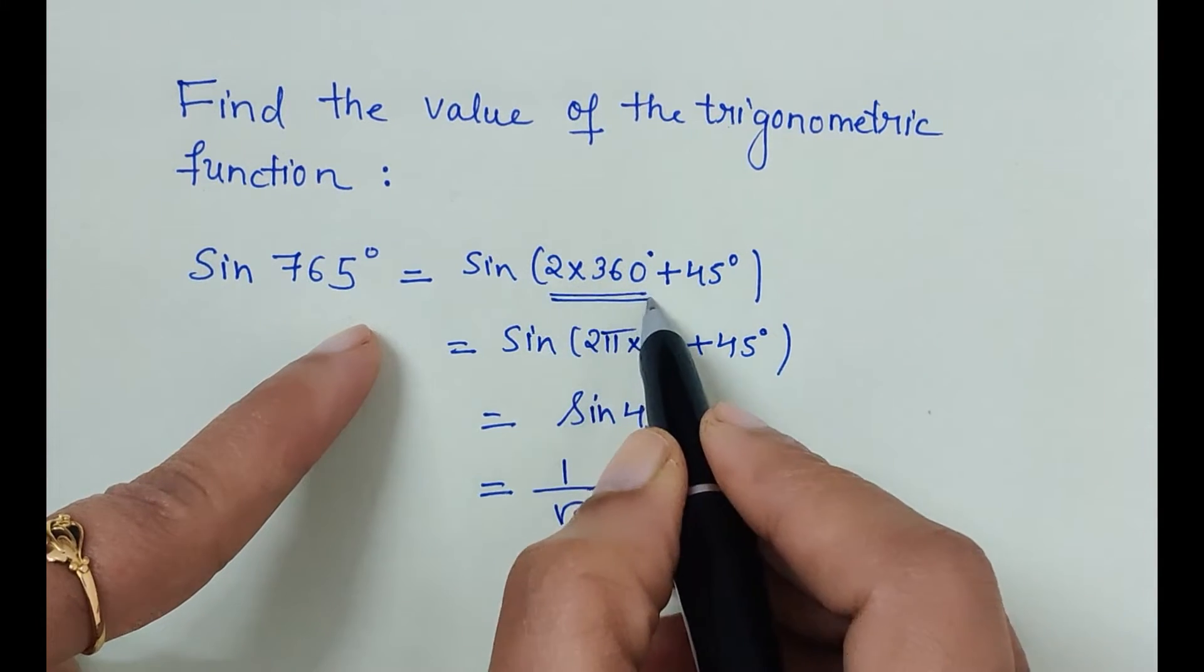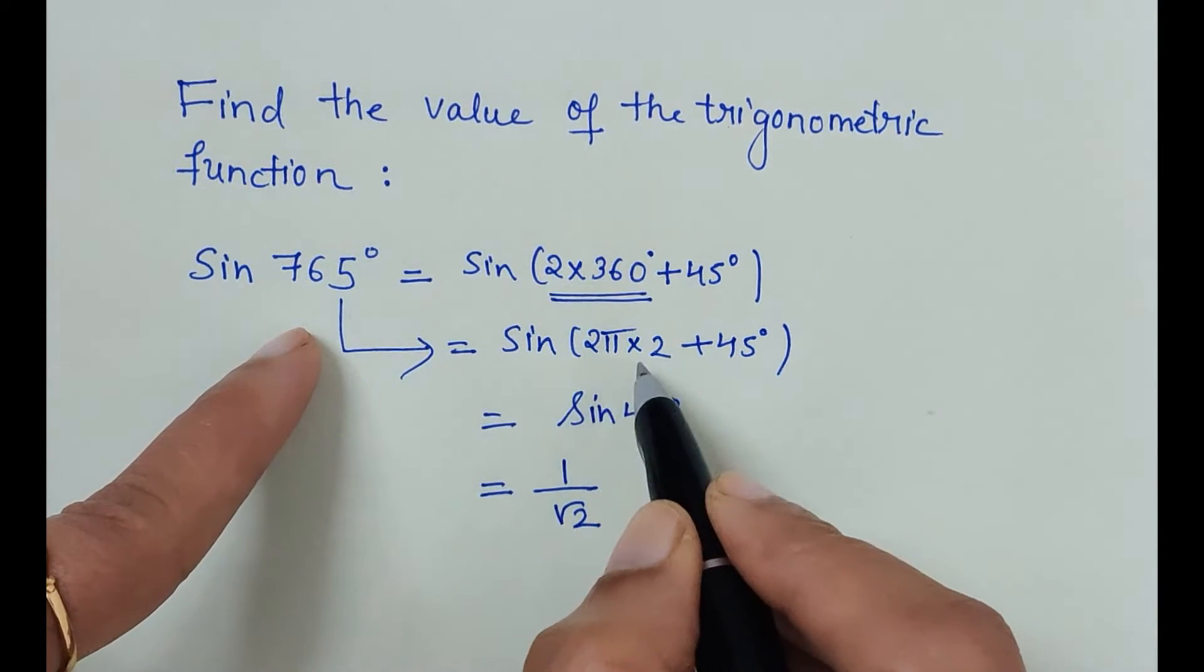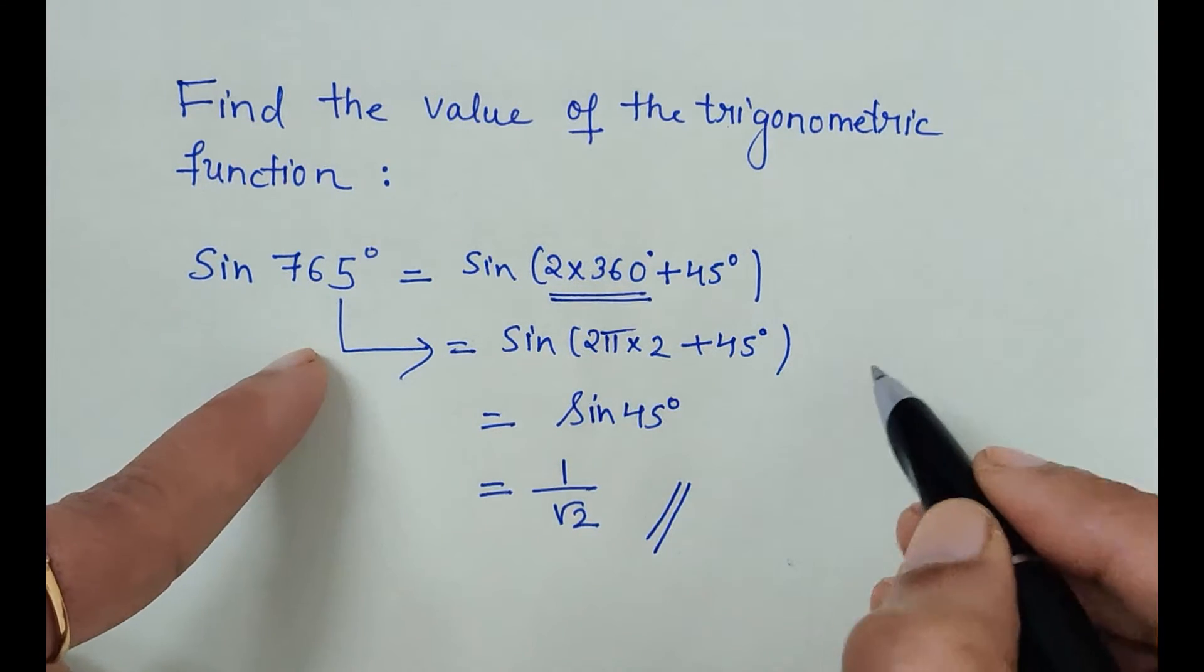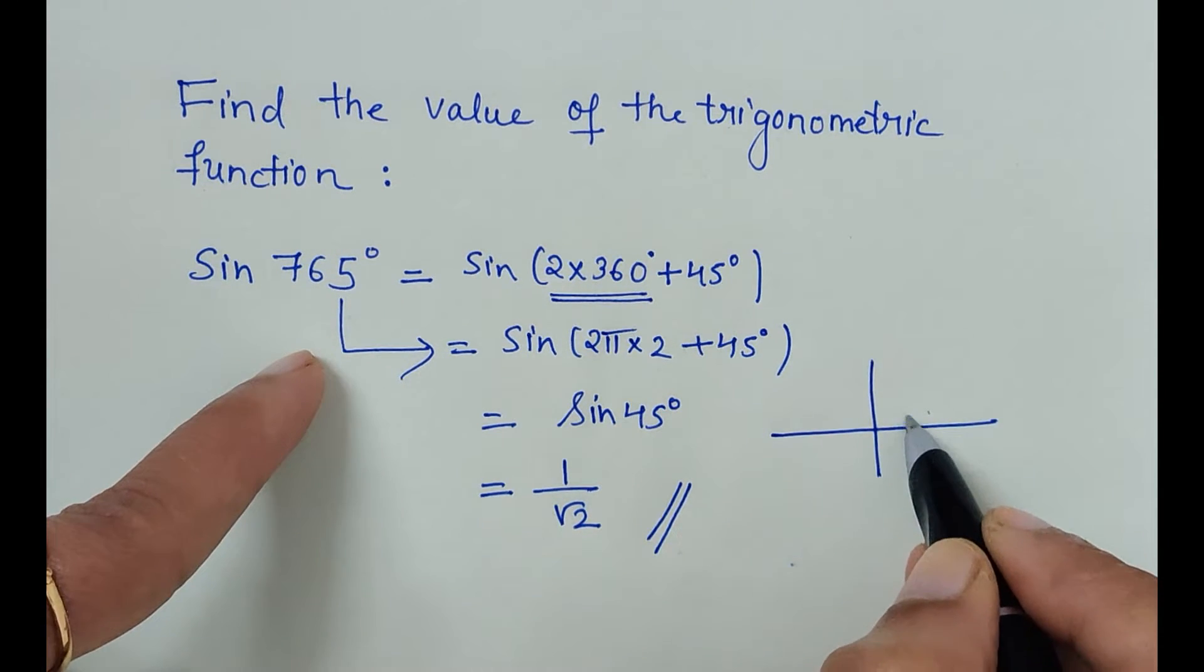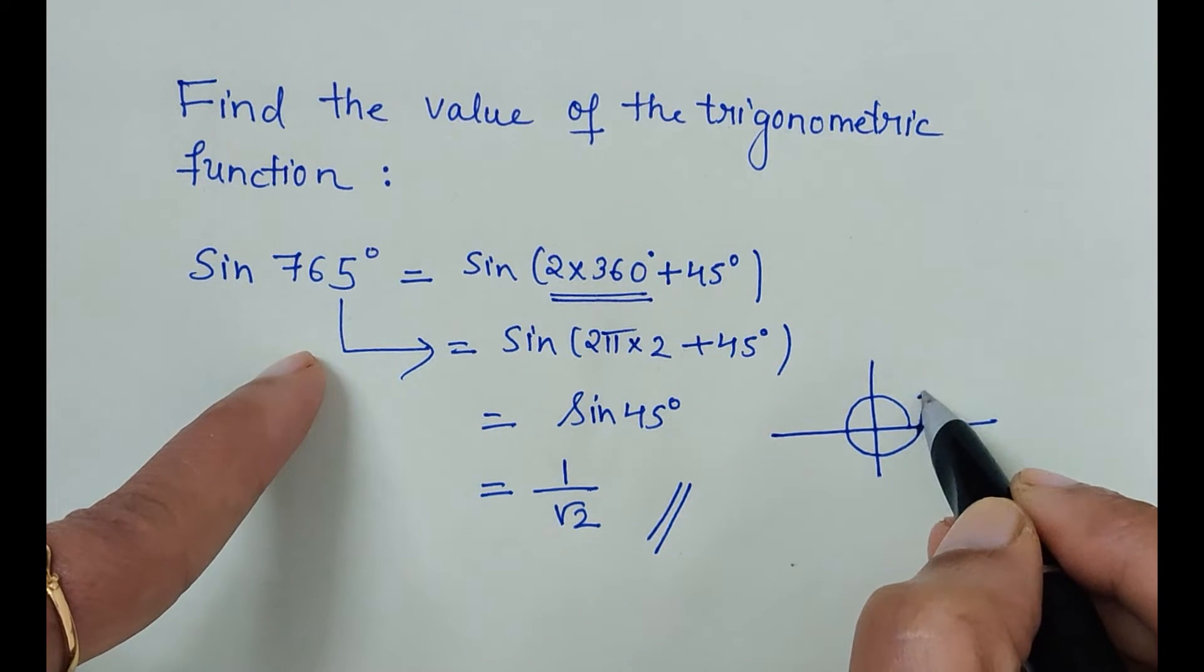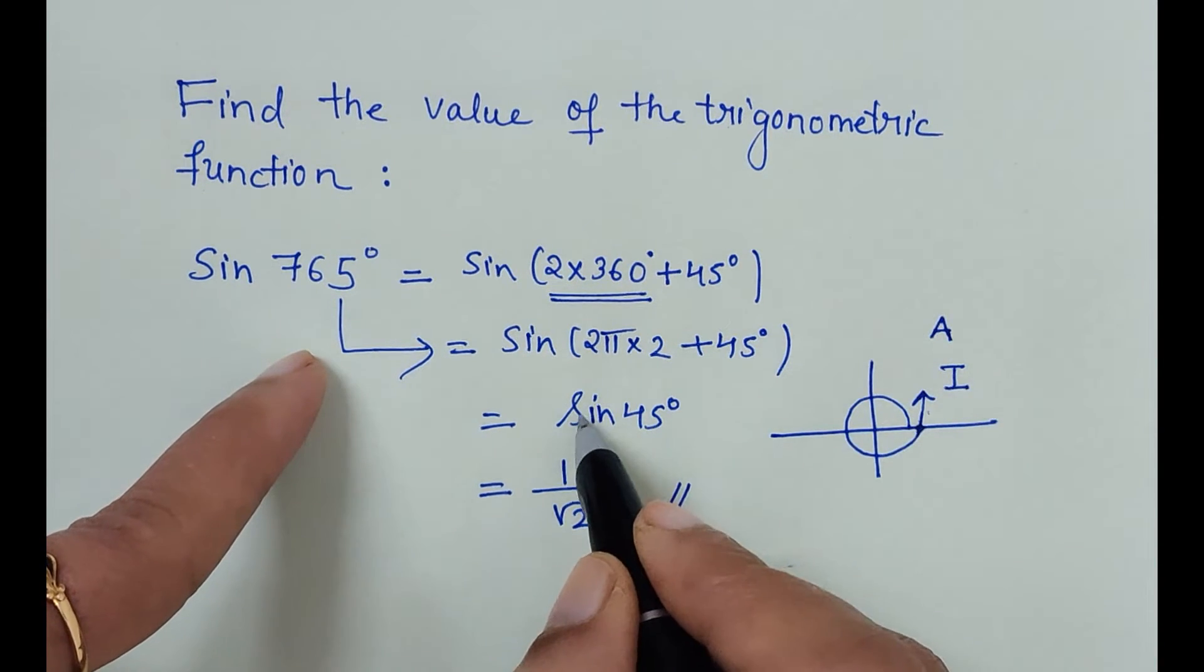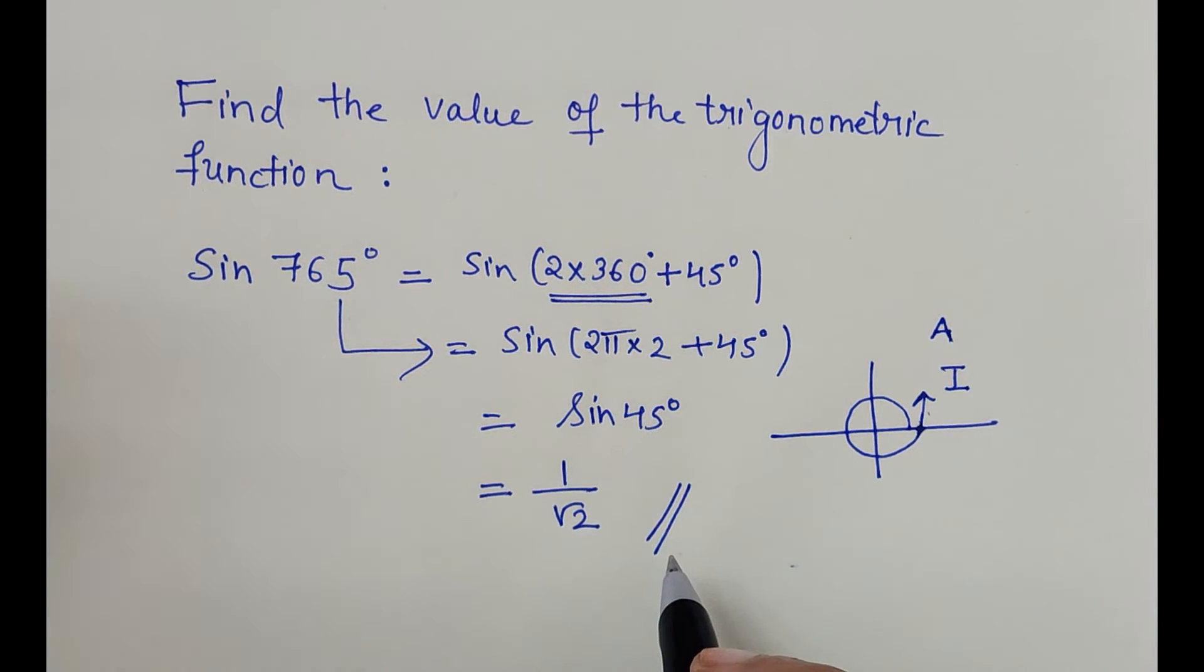For your understanding, I have written it in a split way. Otherwise, directly from here you can write that it is some integral multiple of 2π, hence its value repeats. The sine of 360 plus angle—it lies in the first quadrant where all trigonometric functions have positive sign. So sine of sine is positive, sine 45 is 1 by root 2. This is how we solve any other value trigonometric functions.